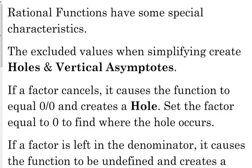Rational functions have some special characteristics that we're going to talk about. Two of those are called holes and vertical asymptotes — that's a very strange word, you have to be careful when you're saying it. Those come from the excluded values that we got when we were simplifying. If a factor cancels, that causes the function to equal 0 over 0, and that causes what we call a hole. We set the factor equal to 0 to find out where that hole occurs.